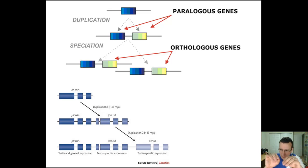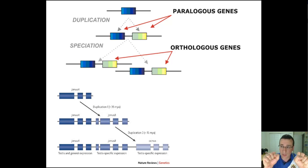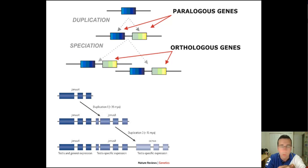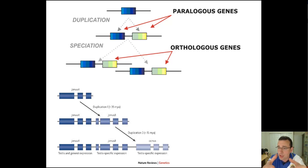Paralogous genes occur within the same genome of the same species when you have several versions of a gene within the same species. Orthologous genes happen when different versions occur in different organisms — where a mutation causes a change so that one organism has one type and the other organism has a different type. Paralogous is two types within the same organism; orthologous is two different types in two different organisms. The one that leads to speciation most is when you have orthologous genes. What matters is that those changes create new variety, and that can lead to evolution.